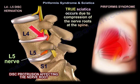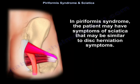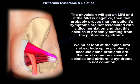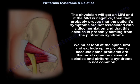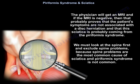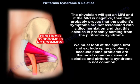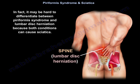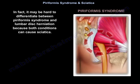True sciatica occurs due to compression of the nerve roots at the spine. In piriformis syndrome, the patient may have symptoms of sciatica that may be similar to disc herniation symptoms. The physician will get an MRI, and if the MRI is negative, that probably proves the patient's symptoms are not associated with disc herniation. We must look at the spine first and exclude spine problems, because this is the most common one. Piriformis syndrome is not common. It may be hard to differentiate between piriformis syndrome and lumbar disc herniation, because both conditions can cause sciatica.